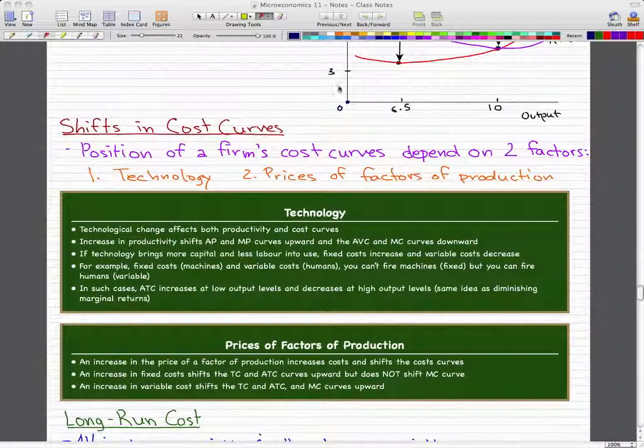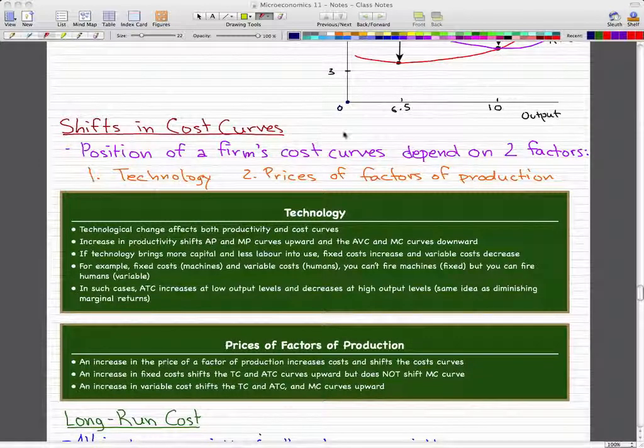Shifts in cost curves: the position of a firm's cost curves depends on two factors - technology and prices of factors of production. Technological changes influence both productivity and cost curves. An increase in productivity shifts the average and marginal power curves upward and the average and marginal cost curves downward.